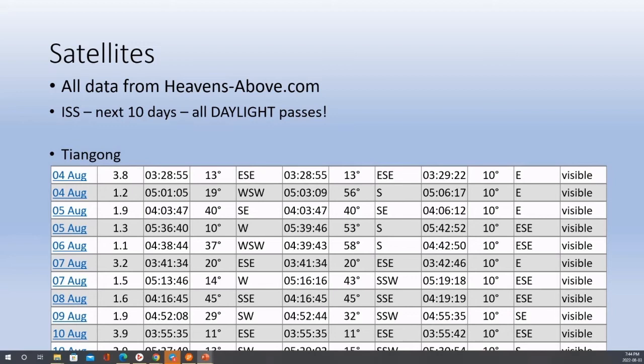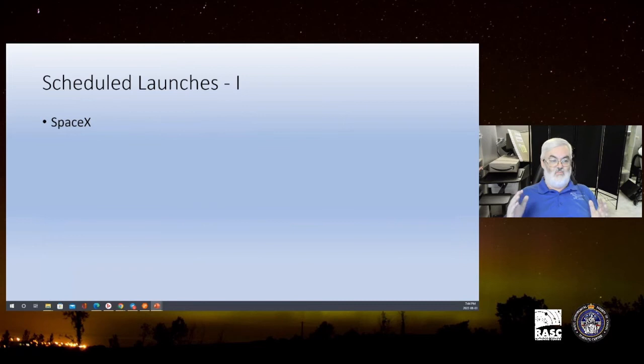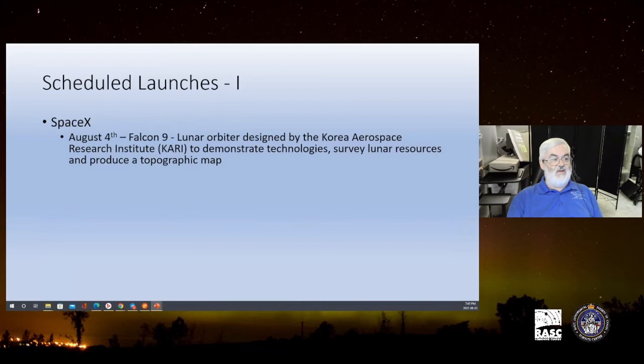Space launches. So of course SpaceX is on its march to being able to launch more rockets this year than ever before in their history. They have a planned launch August 4th, so basically tomorrow, lunar orbiter designed by Korea Aerospace and the Research Institute to demonstrate lunar survey resources and produce a full topographic map of the moon. Their next launch after that, I'm not as thrilled about, some people will be, August 9th, some more Starlink satellites going up. So if you're an astrophotographer, those really suck in my opinion because I get wonderful streaks going through my images.